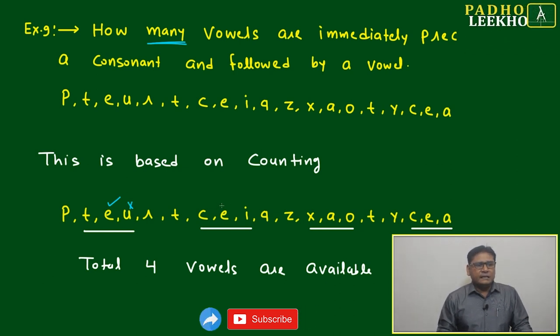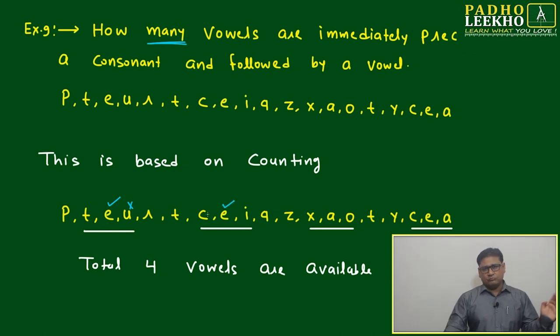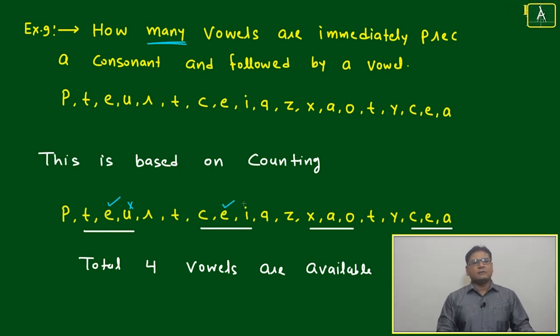Next, E is also perfectly followed - consonant on this side, vowel on that side. But if you look at I, it is not followed by a vowel. Similarly, A is followed, but O is not followed.